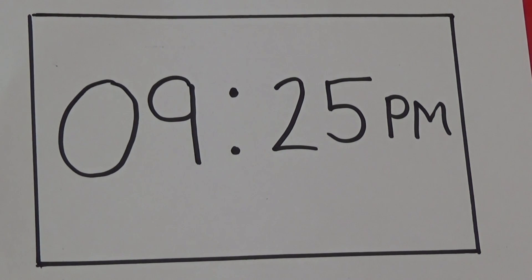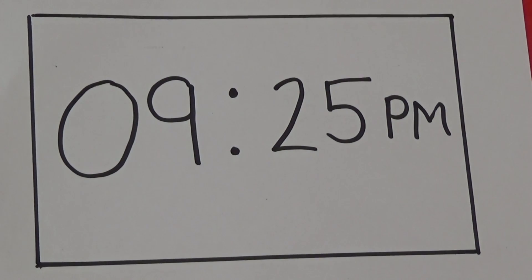And as the minutes past are 25 we write 25. The time being shown in digital here is 9:25 and as it says PM we know it is 9:25 in the evening.